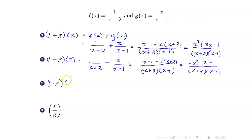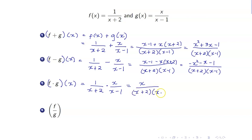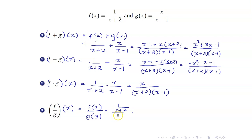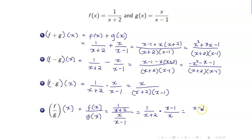For the product f times g, f times g of x is the product of f of x and g of x: 1 over (x plus 2) times x over (x minus 1), so that's x all over (x plus 2)(x minus 1). Lastly, for the quotient f over g, f over g of x is f of x over g of x: 1 over (x plus 2) all over x over (x minus 1). To divide complex fractions, you copy the numerator, change division to multiplication, and take the reciprocal of the denominator — that's (x minus 1) all over x. So this is (x minus 1) all over x times (x plus 2).